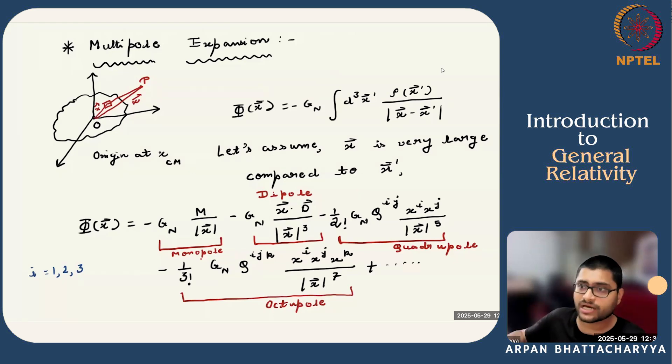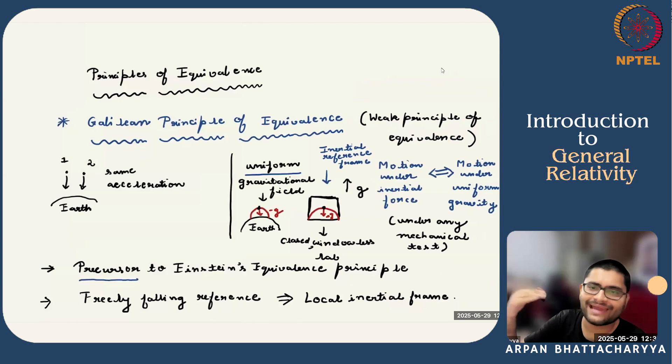Now, we are done with the recap. We will discuss the two equivalence principles put forward by Galileo and Newton. We will start with the Galilean principle of equivalence. Galileo observed that if you place two point particles in the Earth's uniform gravitational field, they experience same acceleration due to the force of gravity. And their motion is identical under the influence of Earth's gravitational field.